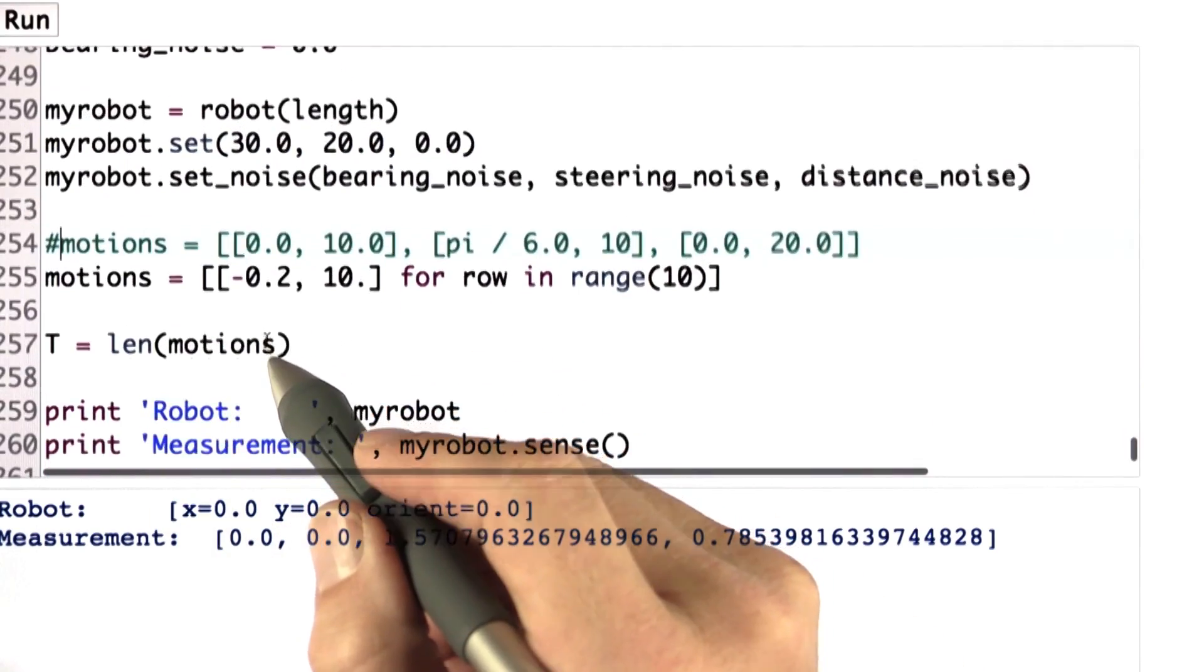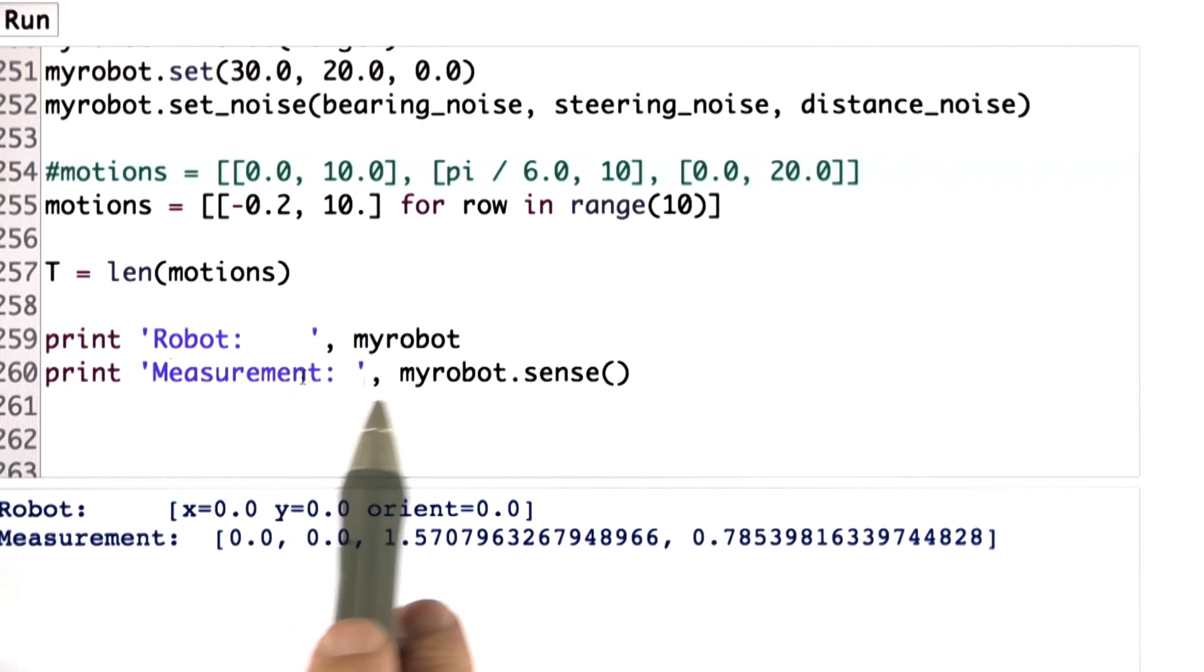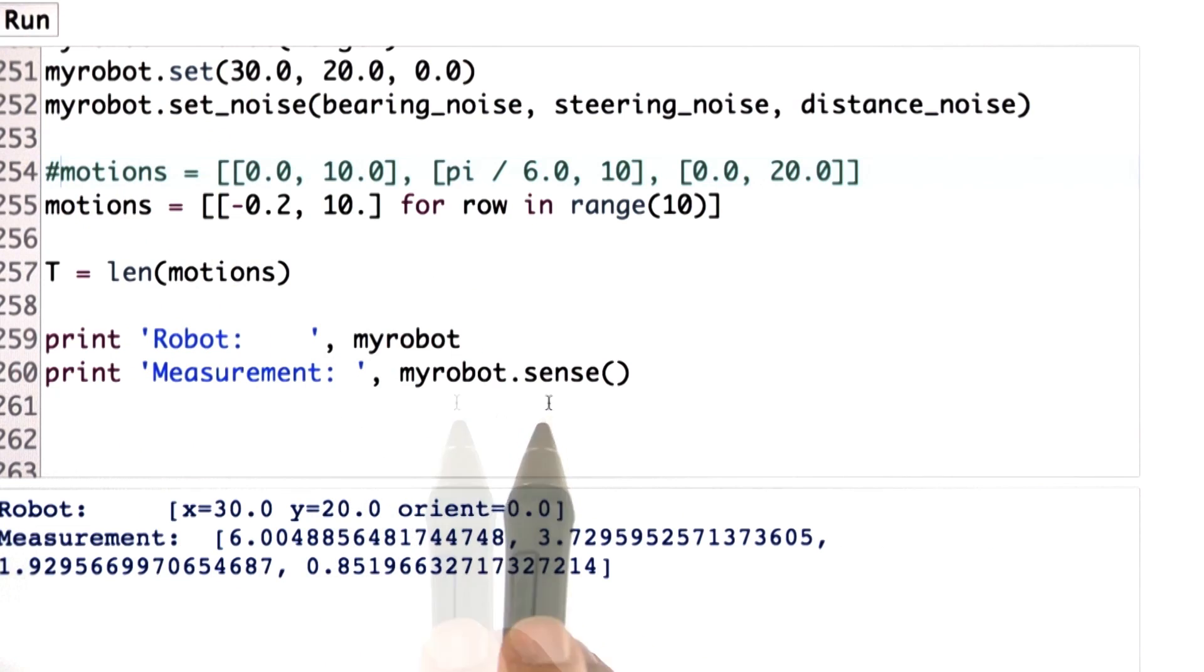But as I go down, I now just execute the following two lines of code. I print the robot coordinates as before, and I print the measurements.